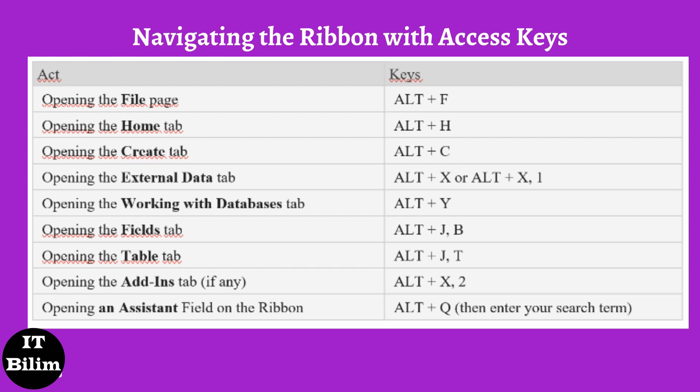Note: when you install an add-in or other program, new tabs may be added to the ribbon, for which corresponding keyboard shortcuts are suggested. There are two ways to navigate tabs on the ribbon. To navigate to the ribbon, press Alt and then the left and right arrow keys to move between tabs. You can also use one of the key tips to navigate directly to a tab on the ribbon.